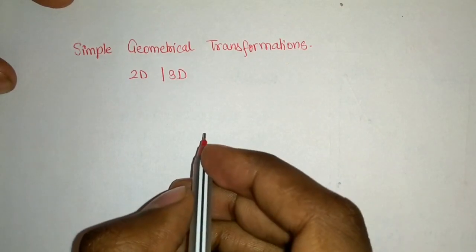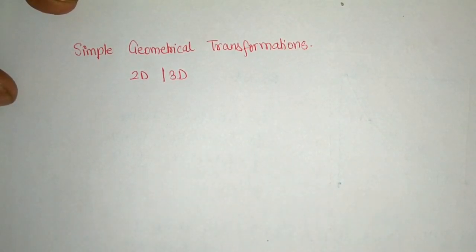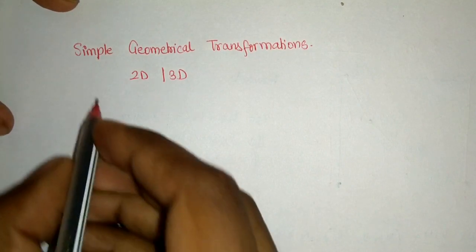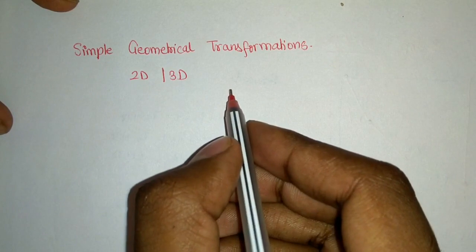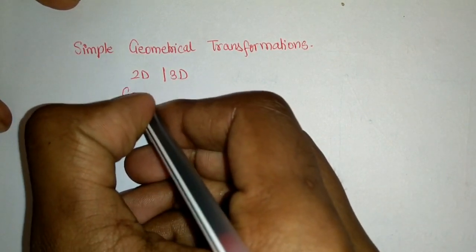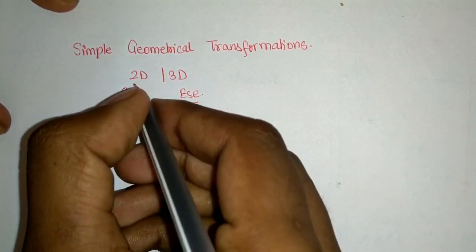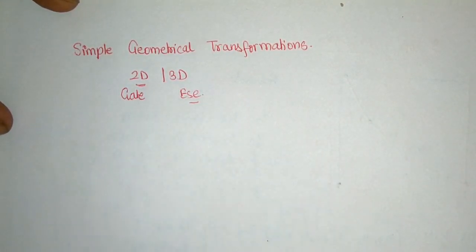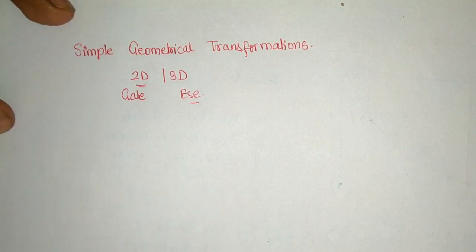Welcome everyone, my name is Pramod Biesel, IIT Delhi graduate and currently an RSME officer 2017 batch. Today we are going to discuss simple geometrical transformations in 2D as well as in 3D. The 2D part is basically for gate purpose only and the 3D part is for ESE. We will be discussing 2D so that you can build your base and concept regarding 3D also by taking clues from 2D itself, which will help you remember the formulas.